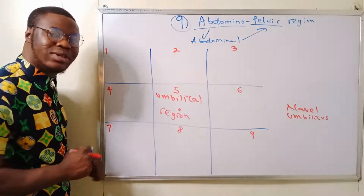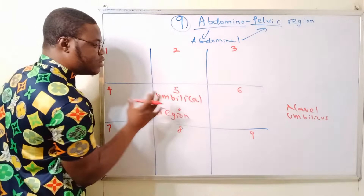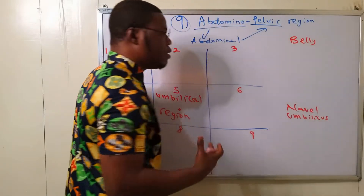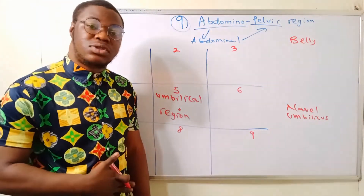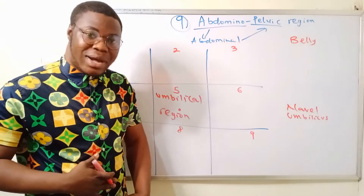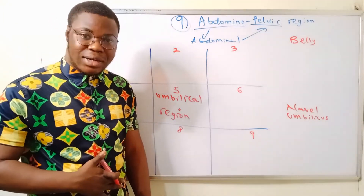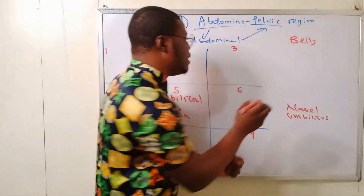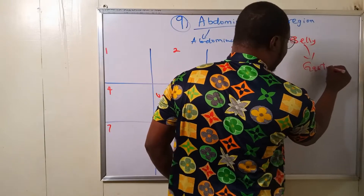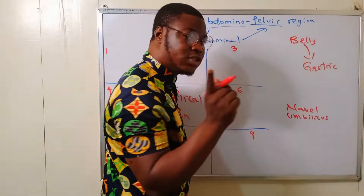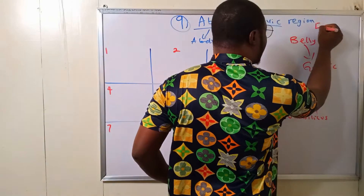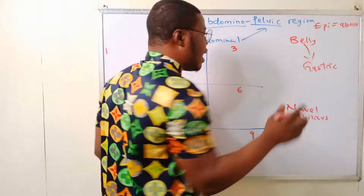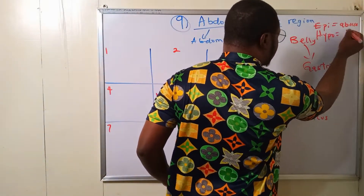The umbilical region is also known as the proper belly. Laypeople call this place the stomach, but as nurses we know that's not anatomically correct. The word belly means gastric. Now take note: in anatomy, the prefix 'epi' means above — just like superior — and the prefix 'hypo' means below, or inferior.